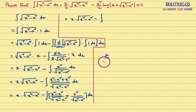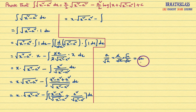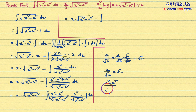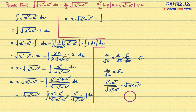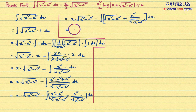If we observe x square minus a square plus a square divided by root over x square minus a square, it is of the form (a + b) divided by c, which equals a/c plus b/c. Now x square minus a square divided by root over x square minus a square: note that a divided by root a equals root a, because multiplying numerator and denominator by root a gives root a squared over root a squared which simplifies to root a. So x square minus a square divided by root over x square minus a square equals root over x square minus a square.